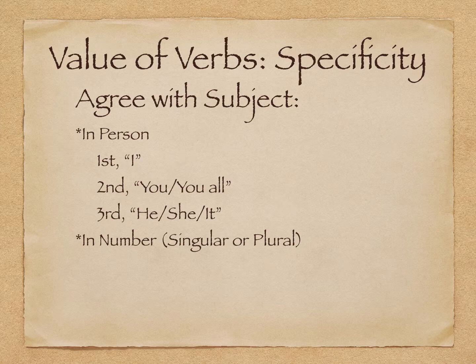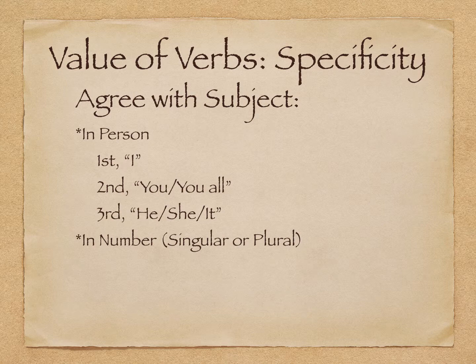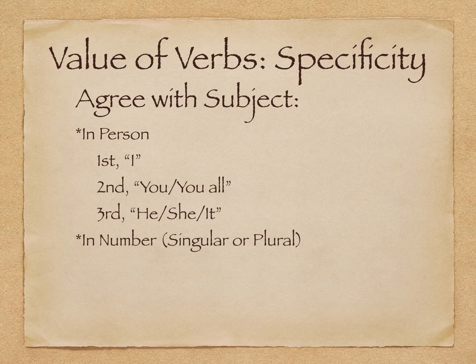We begin with the ideas of person and number, and these verbs agree with the subject. The first person is 'I,' the second person is 'you' or the plural 'you all,' and the third person is 'he,' 'she,' or 'it,' or if plural, 'they.' There is agreement with the verb and the subject that is doing the action or, if the verb is passive, receiving the action. In this way, we can know precisely, generally speaking, the subject that goes with that particular verb.